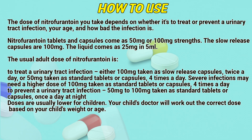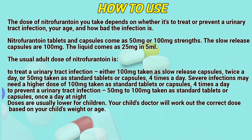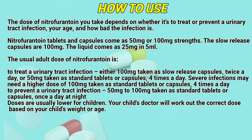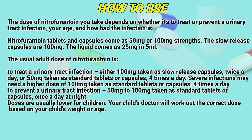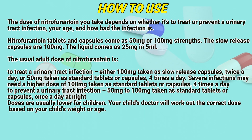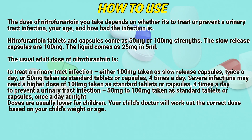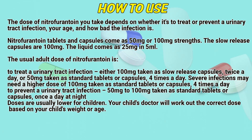The liquid comes as 25 mg in 5 ml. The usual adult dose of nitrofurantoin to treat a urinary tract infection is either 100 mg taking slow-release capsules twice a day, or 50 mg taking standard tablets or capsules four times a day. Severe infections may need a higher dose of 100 mg taking standard tablets or capsules four times a day.